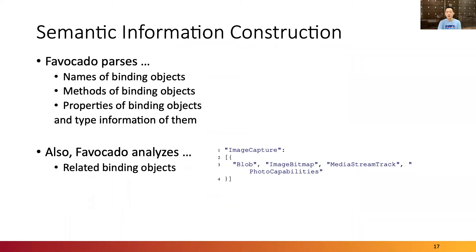Before fuzzing, Favocado also finds binding objects related to each other by using the type information. If an object is used as an argument of a method, a return type, or a type of a property in another object, Favocado records them so that they can be fuzzed together. For example, the ImageCapture object is related to Blob, ImageBitmap, MediaStreamTrack, and PhotoCapabilities objects because these objects are return types of the ImageCapture object's methods.